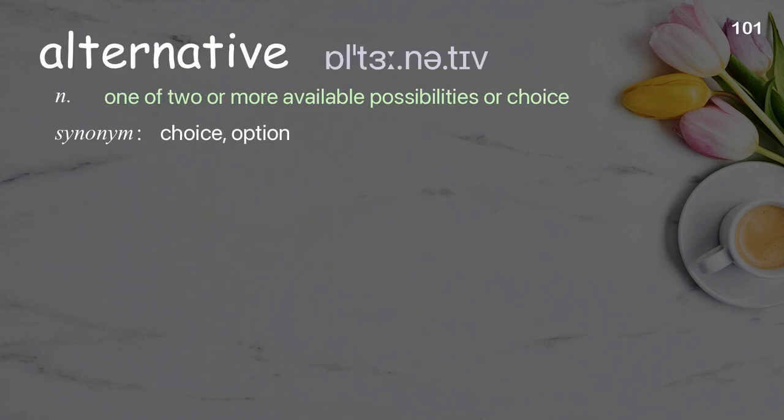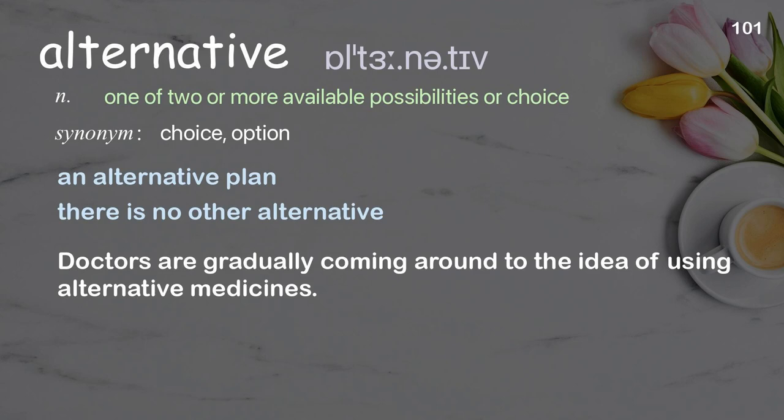Alternative: one of two or more available possibilities or choices. Examples: an alternative plan, there is no other alternative. Doctors are gradually coming around to the idea of using alternative medicines.